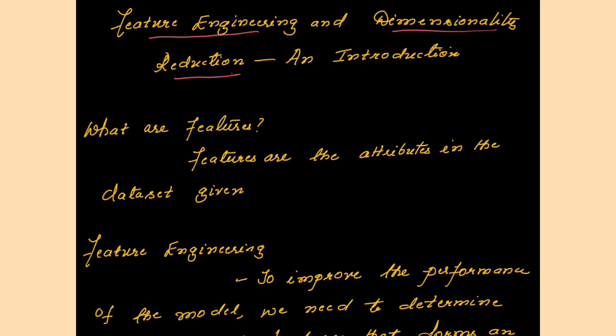Hello viewers, welcome to the video lecture series on machine learning. This session is about the introduction to feature engineering and dimensionality reduction. It is just an introductory session. Features are the attributes in the data set — those attributes given in the data set are called features.